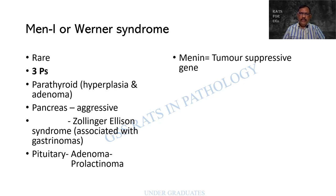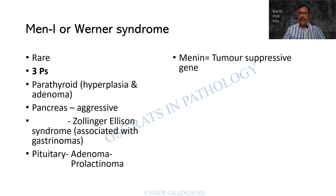MEN1, otherwise called Wermer's syndrome, is quite rare. Remember the three P's: Parathyroid, Pancreas, and Pituitary. In the parathyroid there can be hyperplasia or adenoma. In the pancreas it is aggressive and there can be Zollinger-Ellison syndrome associated with peptic ulcer or a gastrinoma. In the pituitary there can be an adenoma, more specifically a prolactinoma.